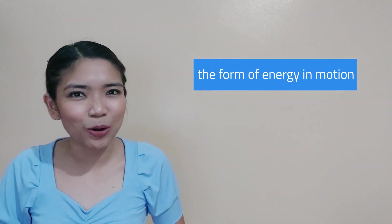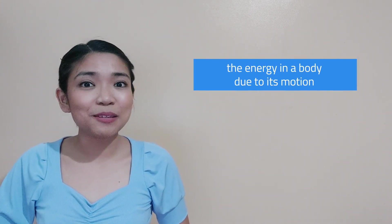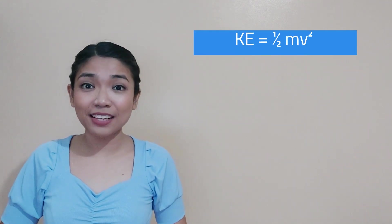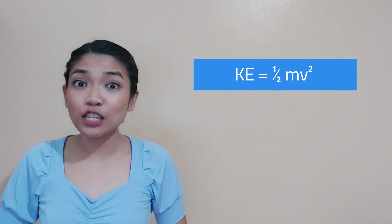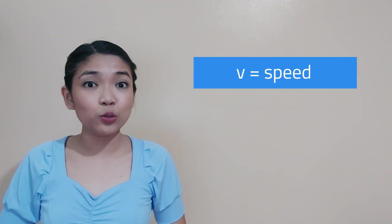Can you still keep up? Great! Now, from the form of energy due to its position, let's move on to the form of energy in motion — kinetic energy! It is the energy in a body due to its motion. The SI unit for kinetic energy is joules and is mathematically expressed as KE = ½mv², where m is mass and v is speed.